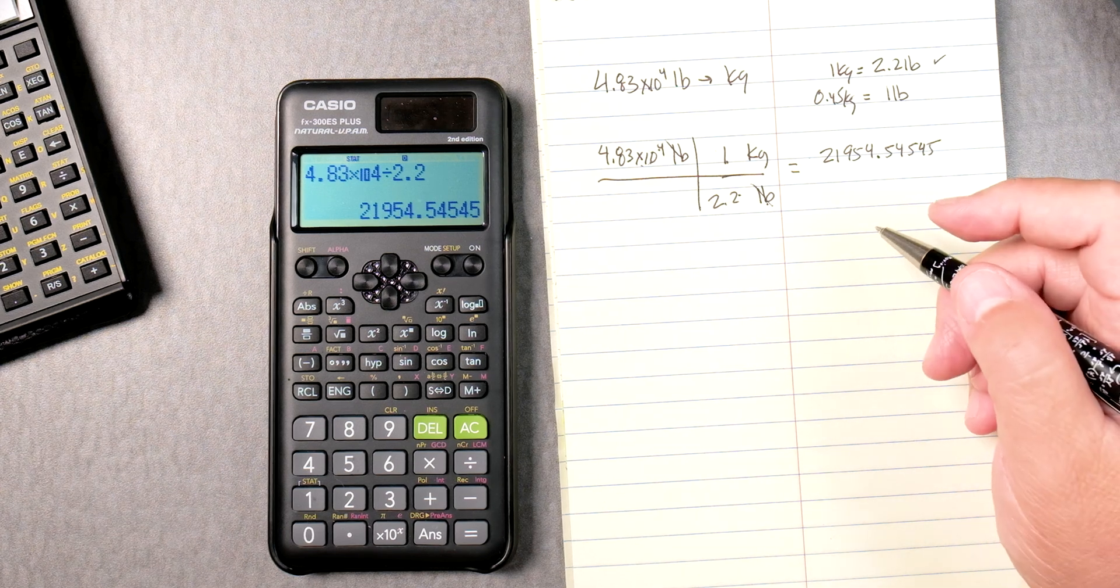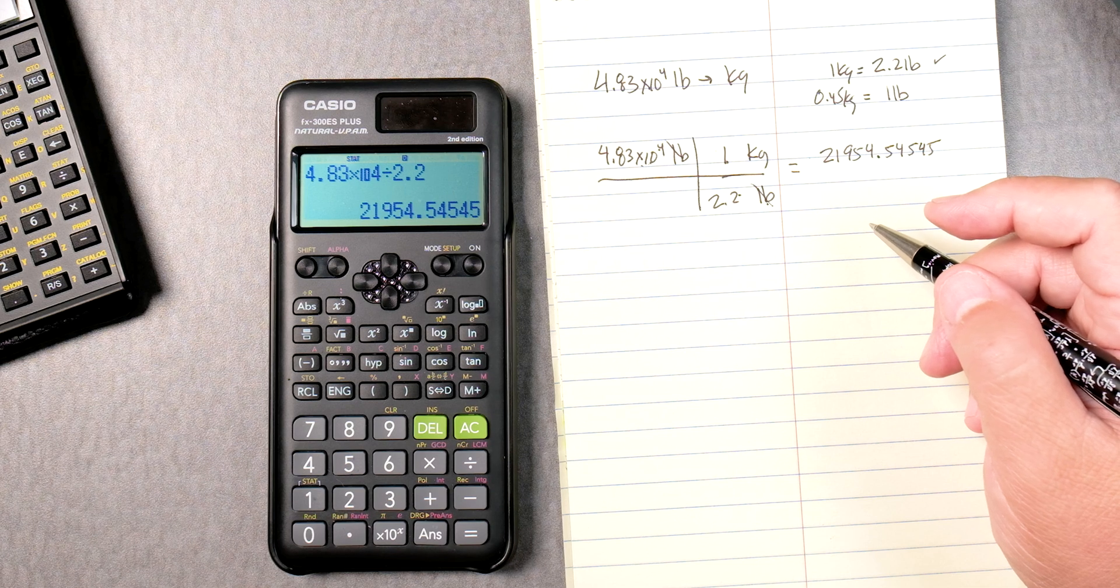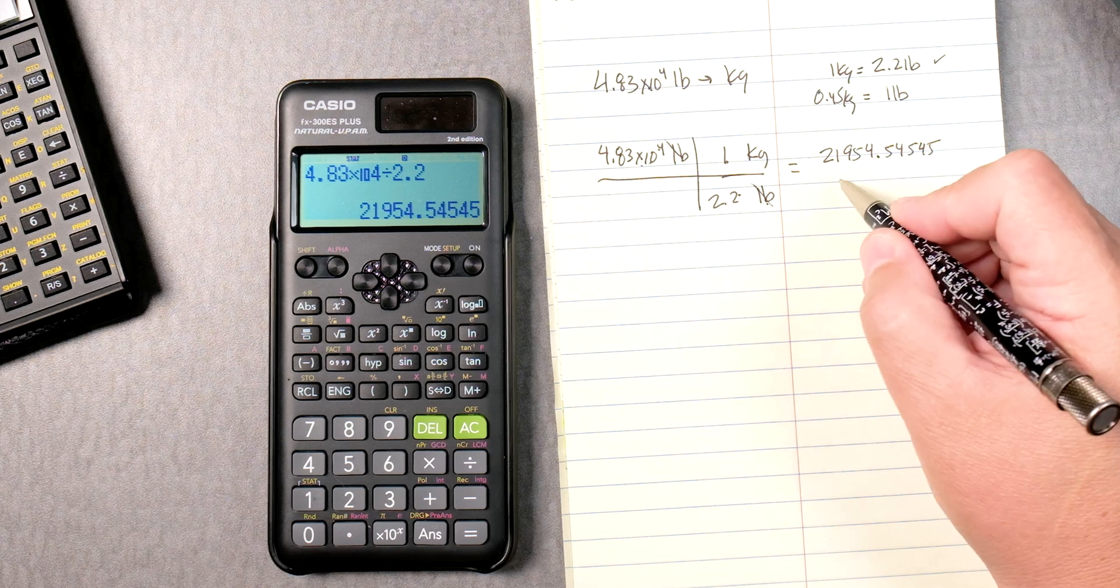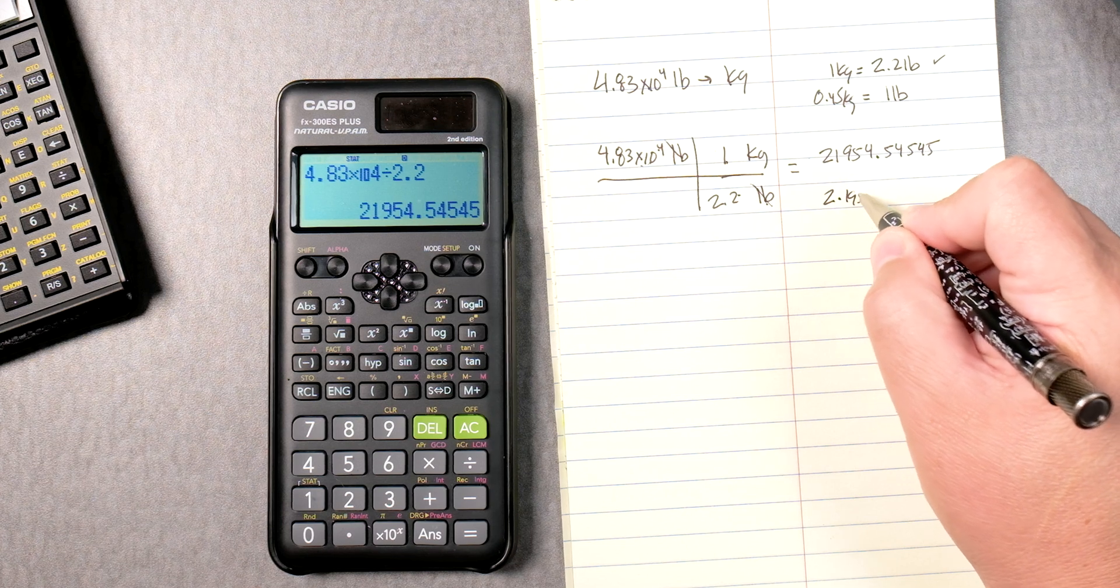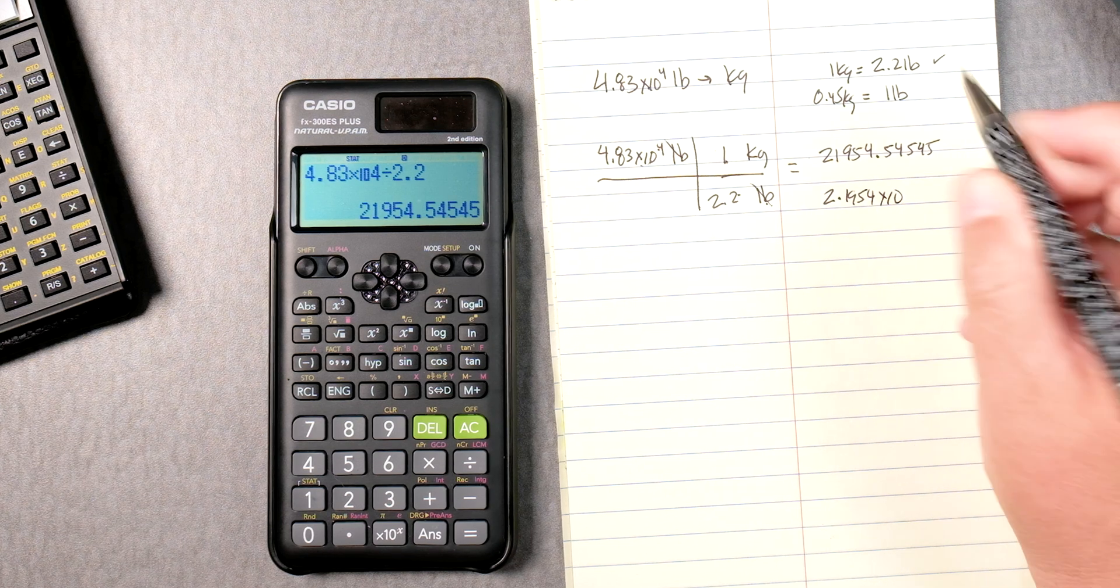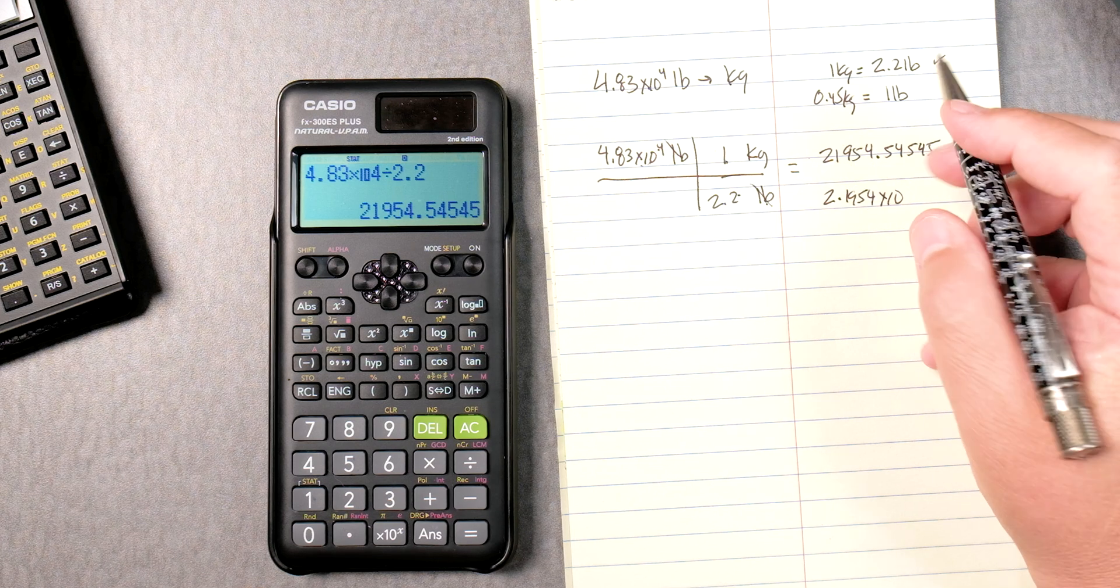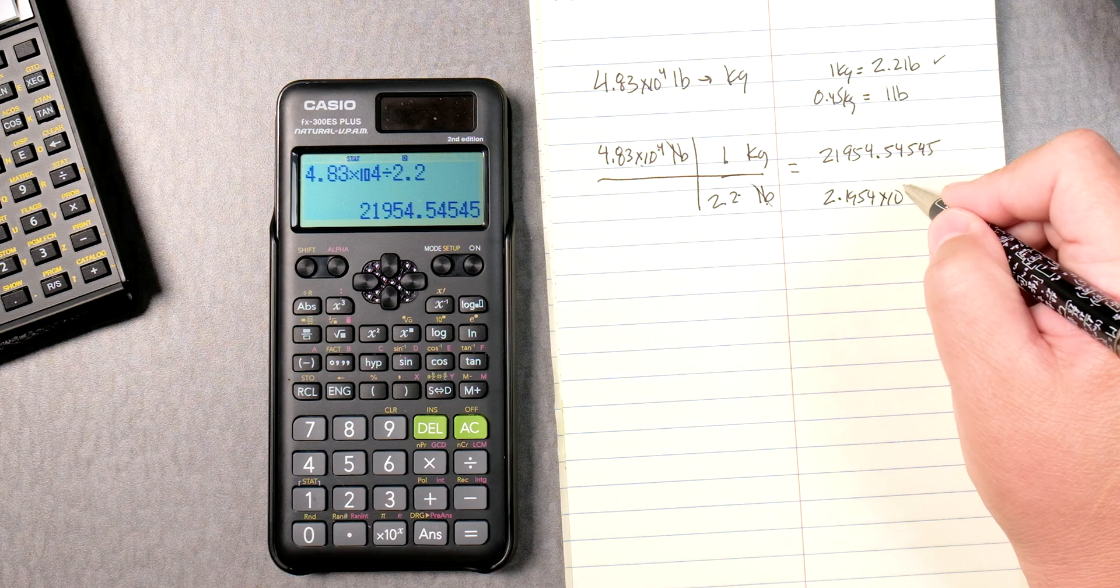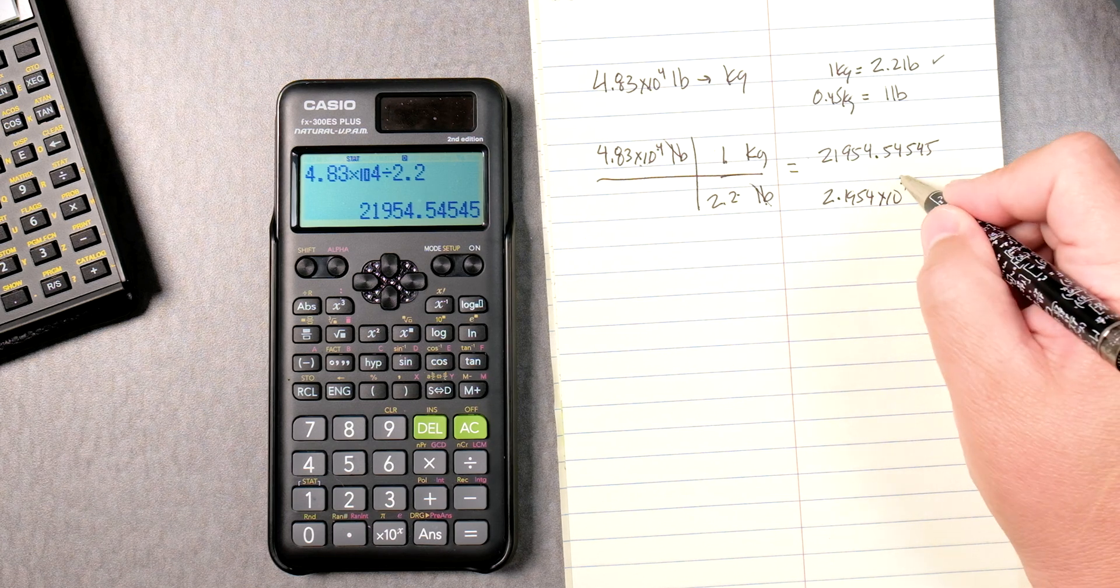And we can convert this into scientific notation. So here, we're going to go with 2.1954 times 10 to the what? Well, we're going to go 1, 2, 3, 4. That's going to give you to the fourth.